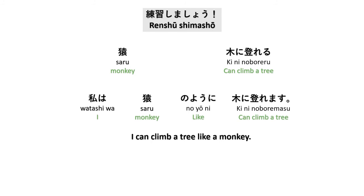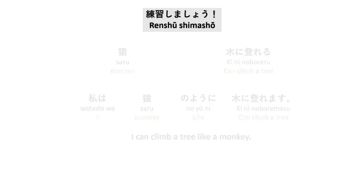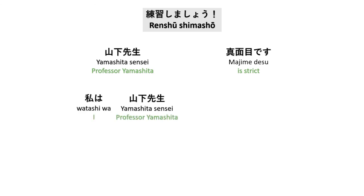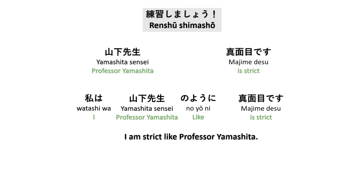Saru — monkey. Ki ni noboreru — can climb a tree. Watashi wa saru no yoni ki ni noboremasu — I can climb a tree like a monkey. Yamashita-sensei — majime — strict/serious. Watashi wa Yamashita-sensei no yoni majime desu — I am strict like Professor Yamashita.